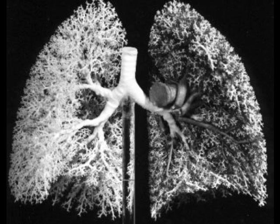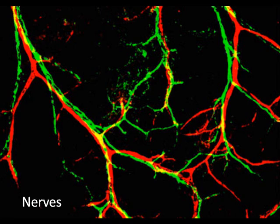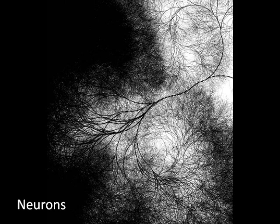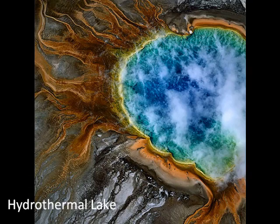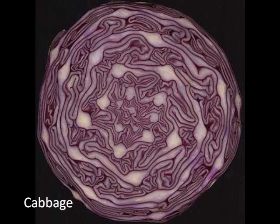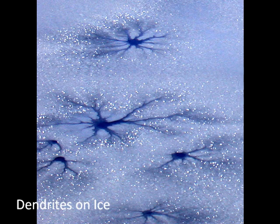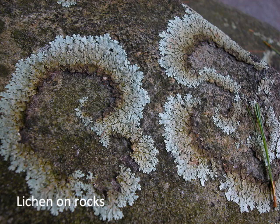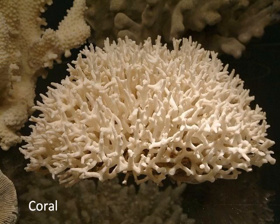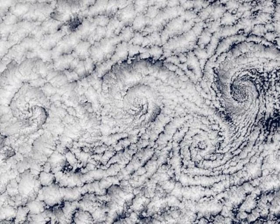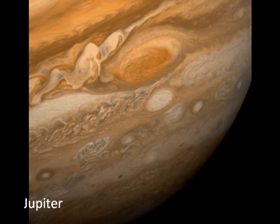Fractals are even found within our bodies. Fractal pathways are the most efficient way for us to get nutrients and information to and from all of our cells. Fractals appear everywhere in the world, from microscopic levels, under the water, in the air, and even in outer space.